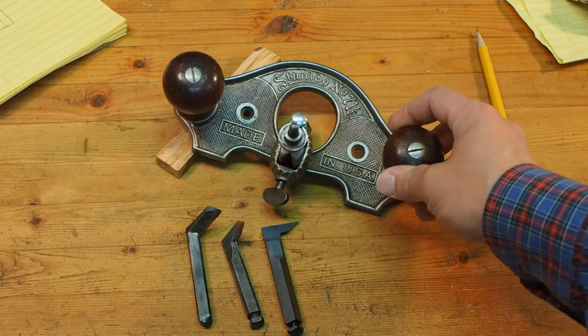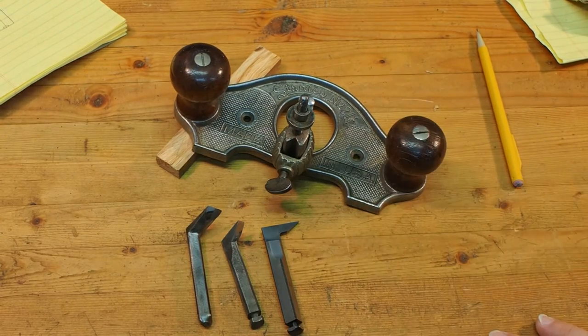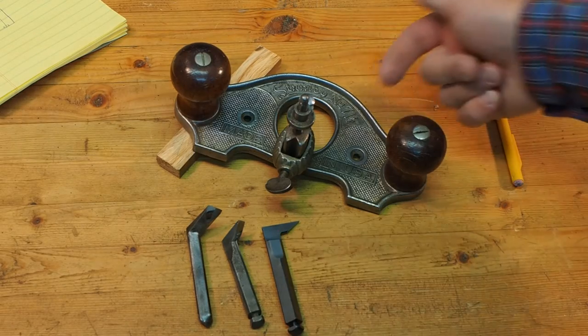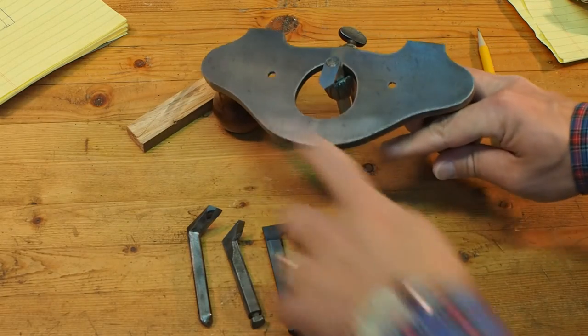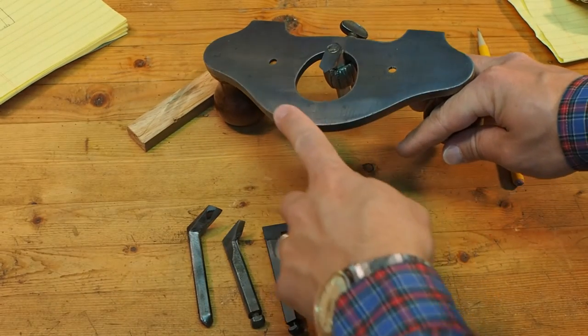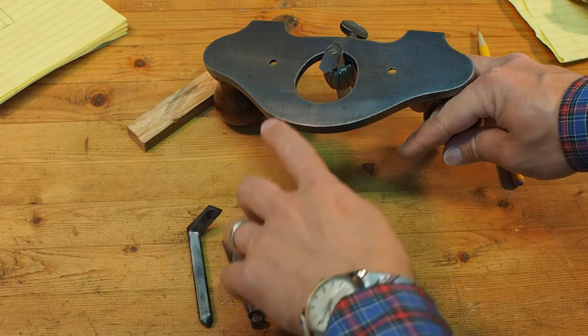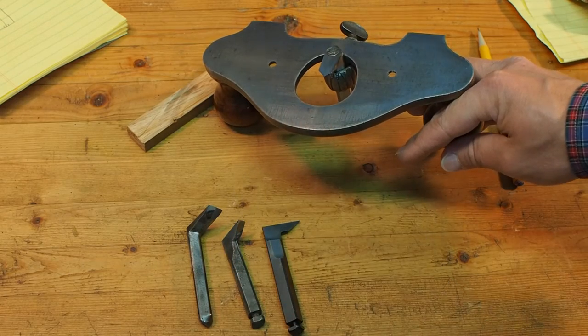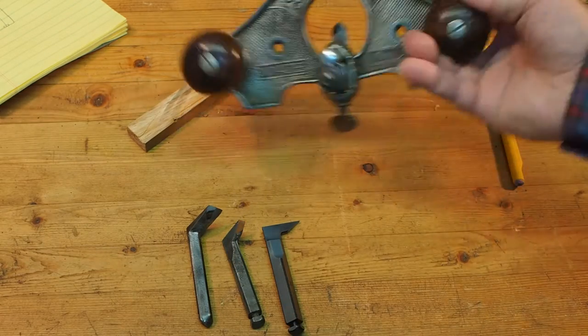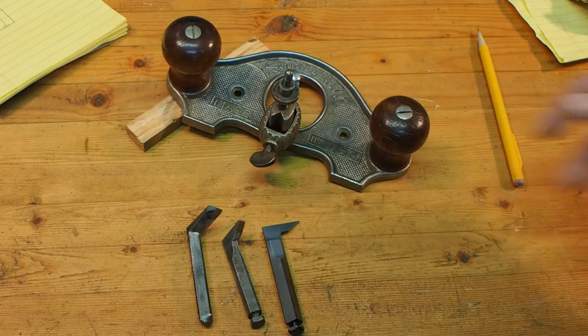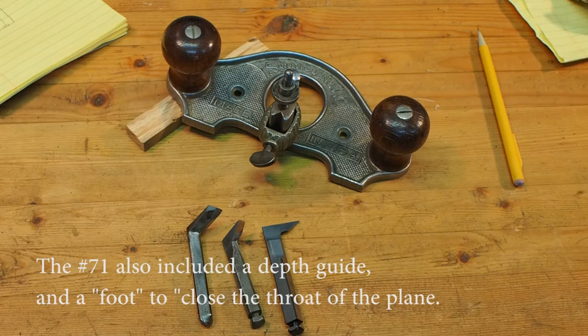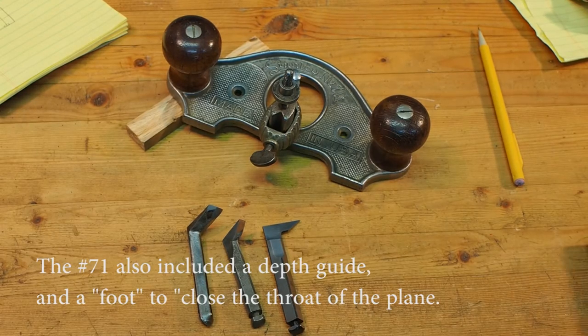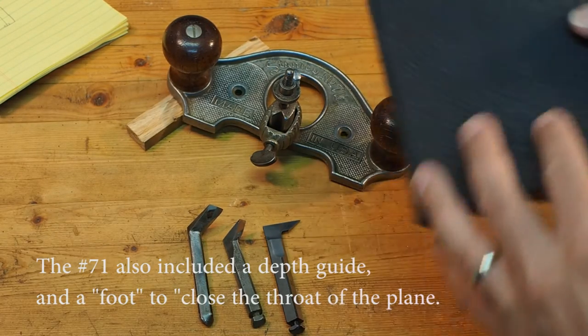The main difference in the 71 and a half and the 71 was the 71 had what's called an open throat. So instead of having this piece come all the way across here flat like that, it kind of had an open space in here. The idea was that you could see what you were doing better and see where you were working. I found in actual use I like this better. I've never used the other one, but you need more room to register this.